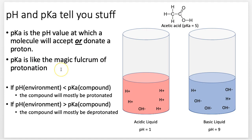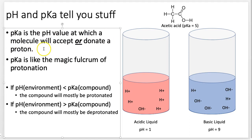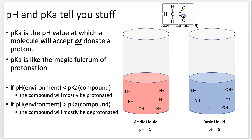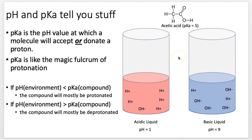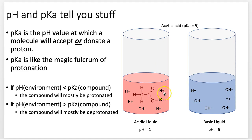pKa is the pH value at which a molecule will accept or donate a proton — it's the magic fulcrum of protonation. Here I have acetic acid; there's the hydrogen it would give up, and it has a relatively low pKa of five. We compare that pKa to the pH of the environment. If the pH is below five, there's a bunch of hydrogen ions around already, and acetic acid is not going to give up its hydrogen. Why would it? There are so many hydrogen ions — it's just not going to give it up.